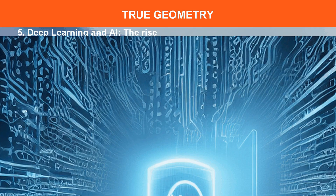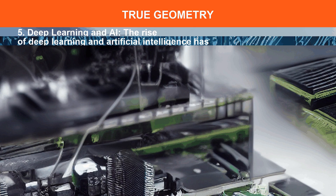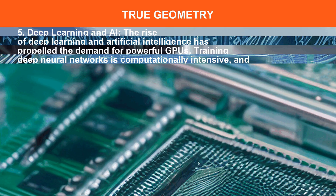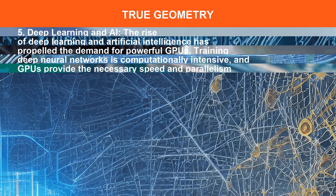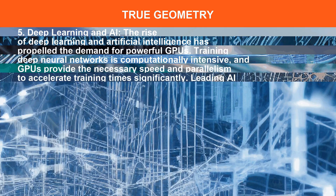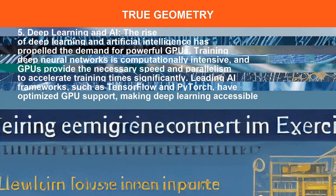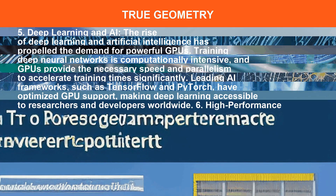The rise of deep learning and artificial intelligence has propelled the demand for powerful GPUs. Training deep neural networks is computationally intensive, and GPUs provide the necessary speed and parallelism to accelerate training time significantly. Leading AI frameworks such as TensorFlow and PyTorch have optimized GPU computing.